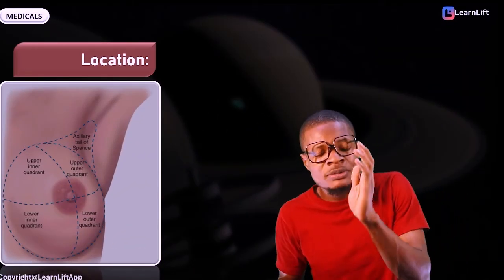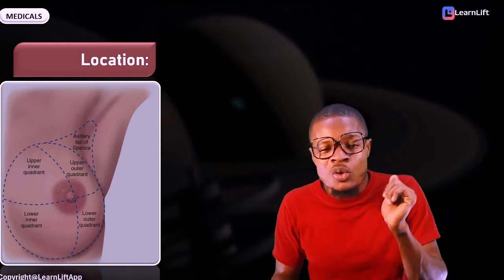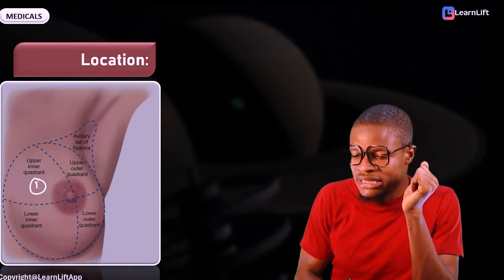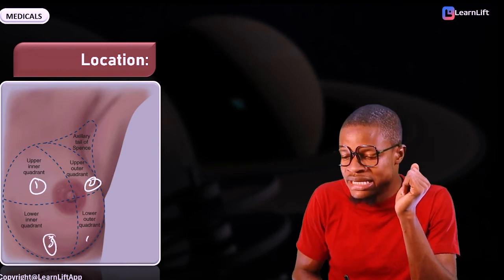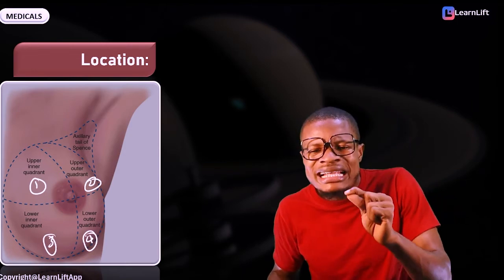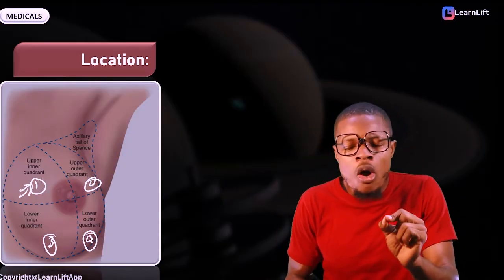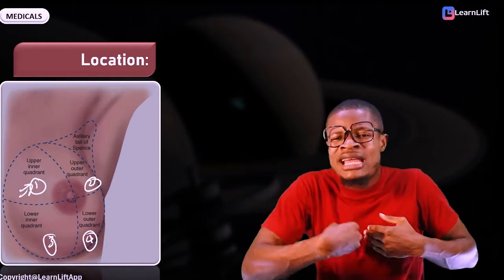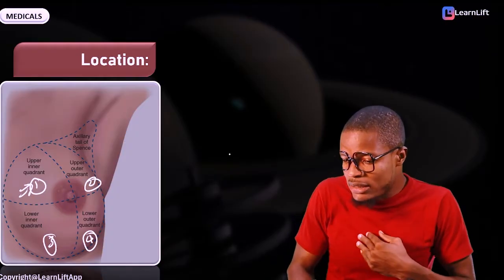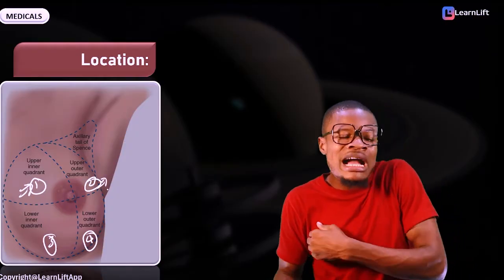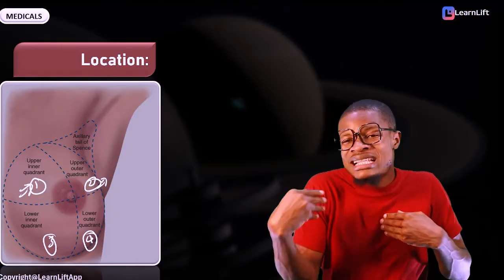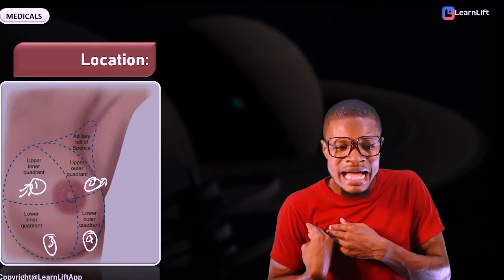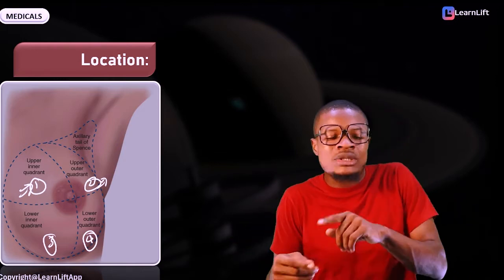We can split the breast into four quadrants. The first quadrant is called the upper inner quadrant — it is called inner because it is close to the midline of the body. The second quadrant is the upper outer quadrant. The one that is medial is inner, the one that is lateral is outer. So we have the upper inner quadrant, the upper outer quadrant, the lower inner quadrant, and the lower outer quadrant.